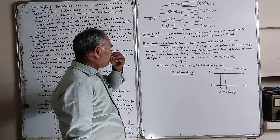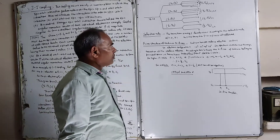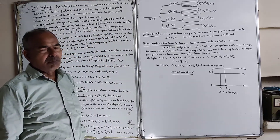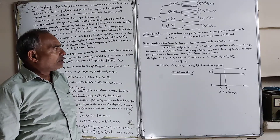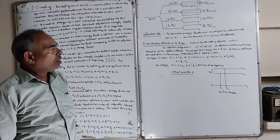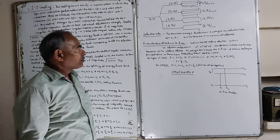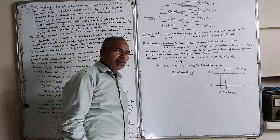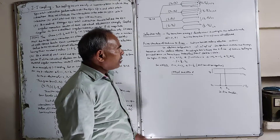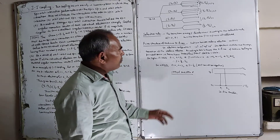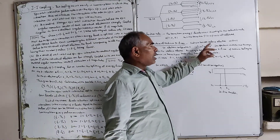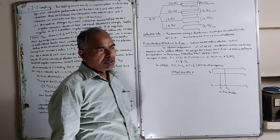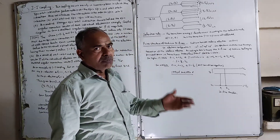Now for the sodium D lines: the sodium atom has atomic number Z equal to 11, with electronic configuration 1s2, 2s2, 2p6, 3s1, as discussed in the first lecture on Alkali spectra. The 3s level is the last state, with one valence electron in the higher orbit.